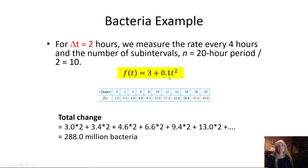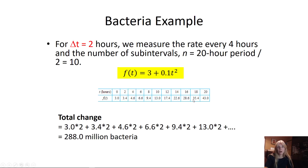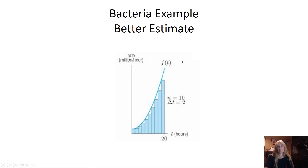If I change to Δt = 2 hours, I'm measuring every two hours: 0, 2, 4, 6, 8, and so on. I still plug all these values into the function to make my table. Starting at the left, I take each value and multiply by two. I stop at 35.4 — I don't include the last one — because I'm computing the underestimate.